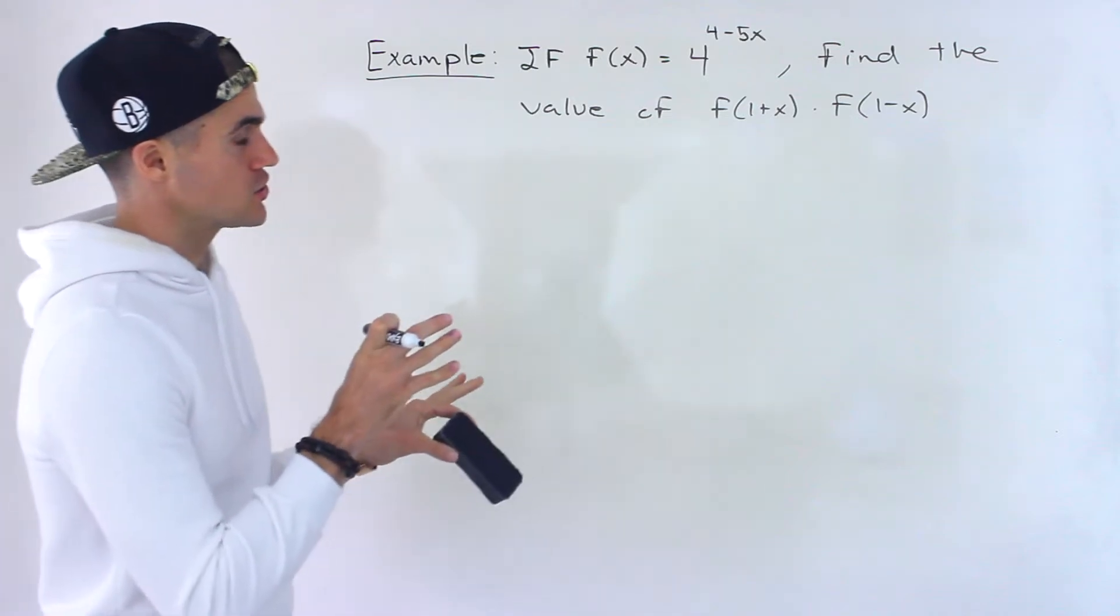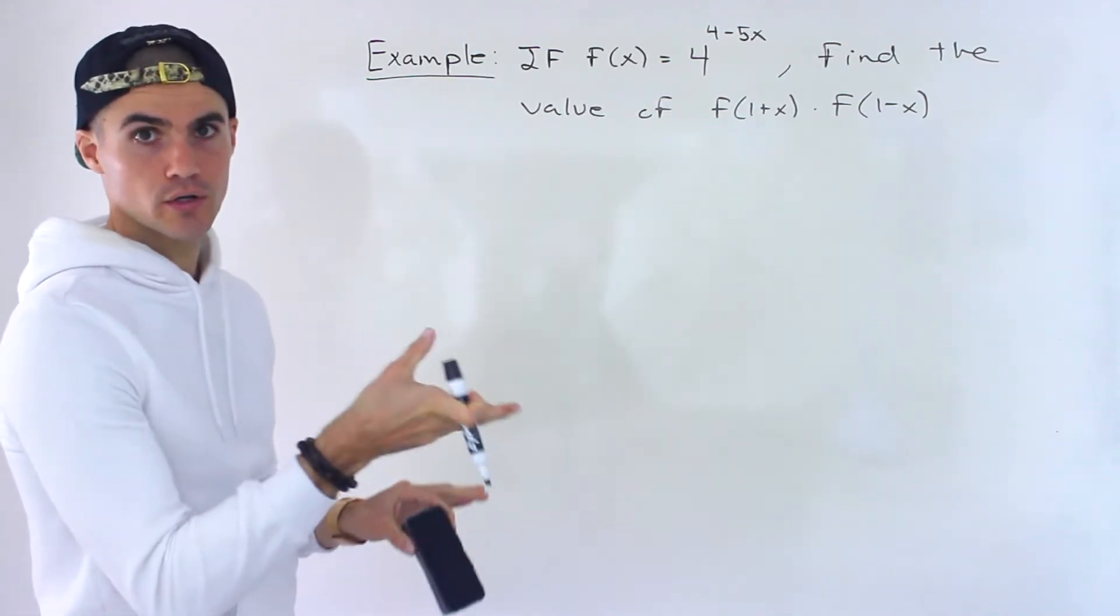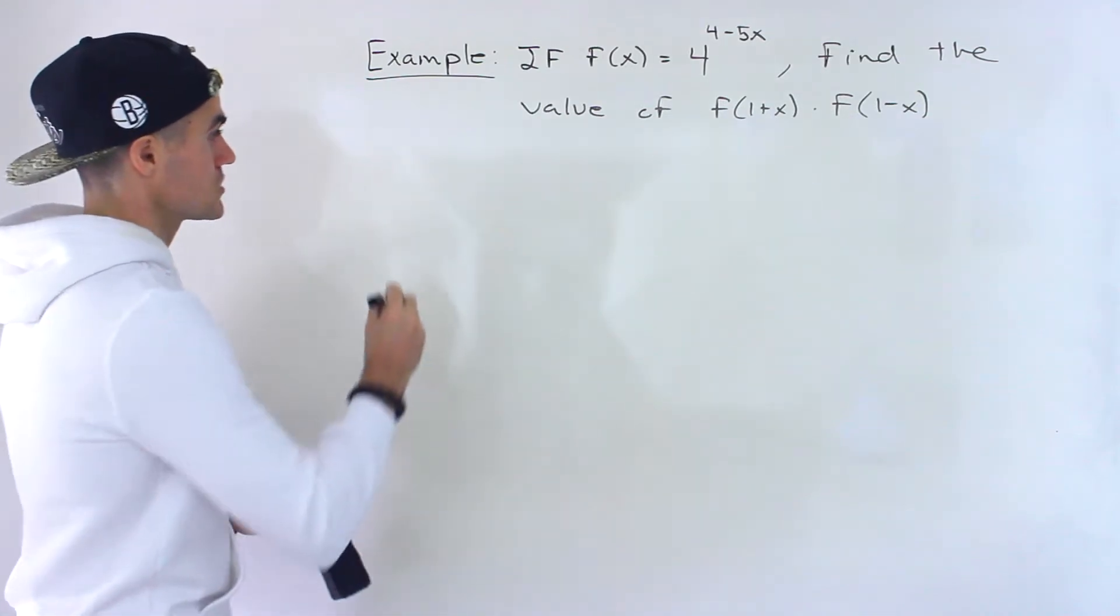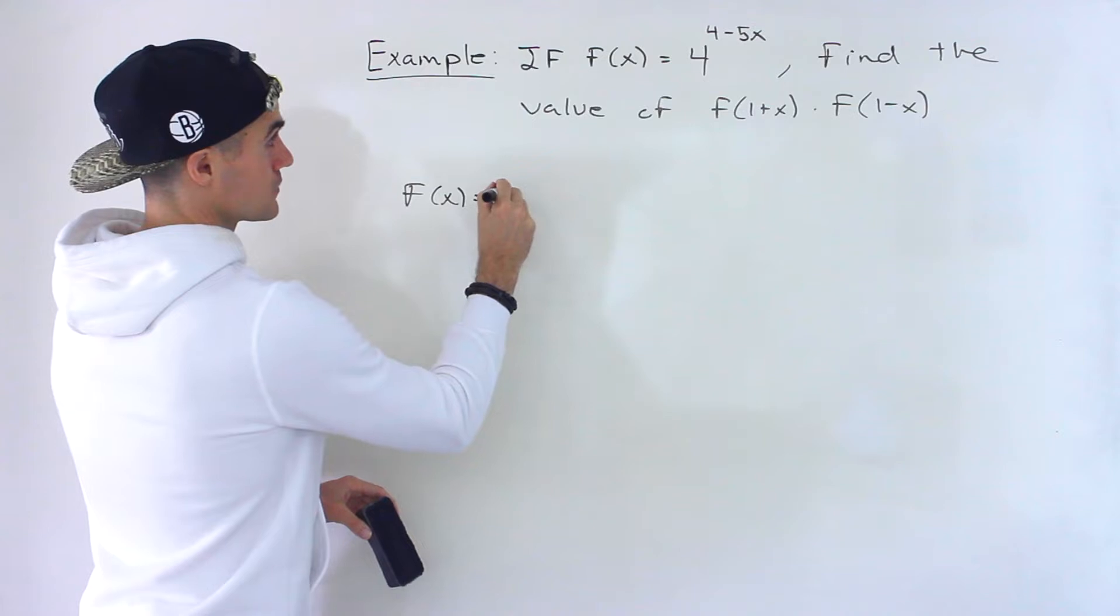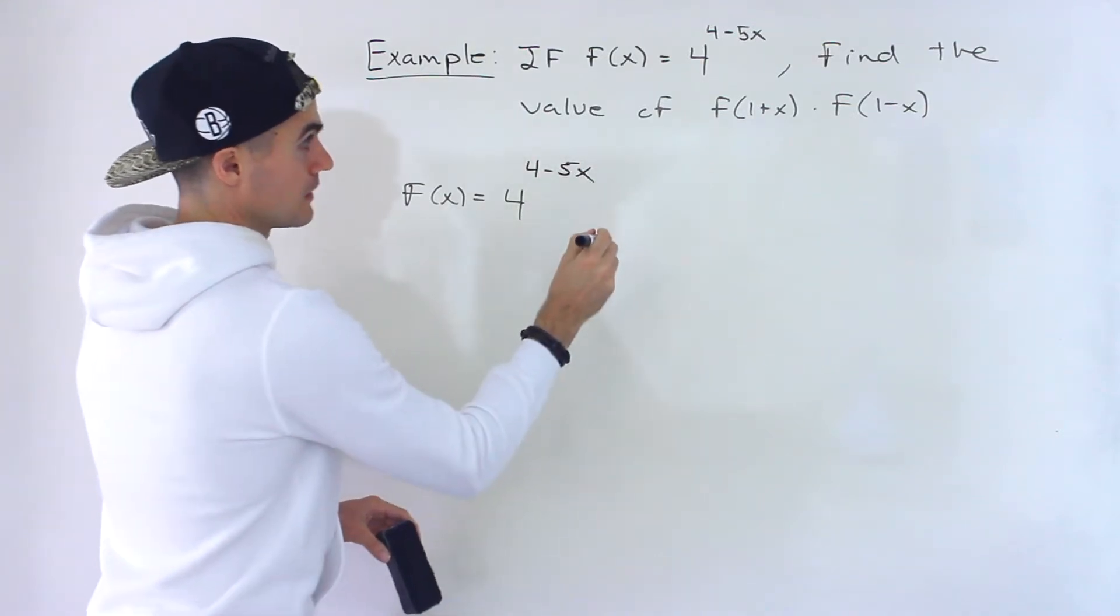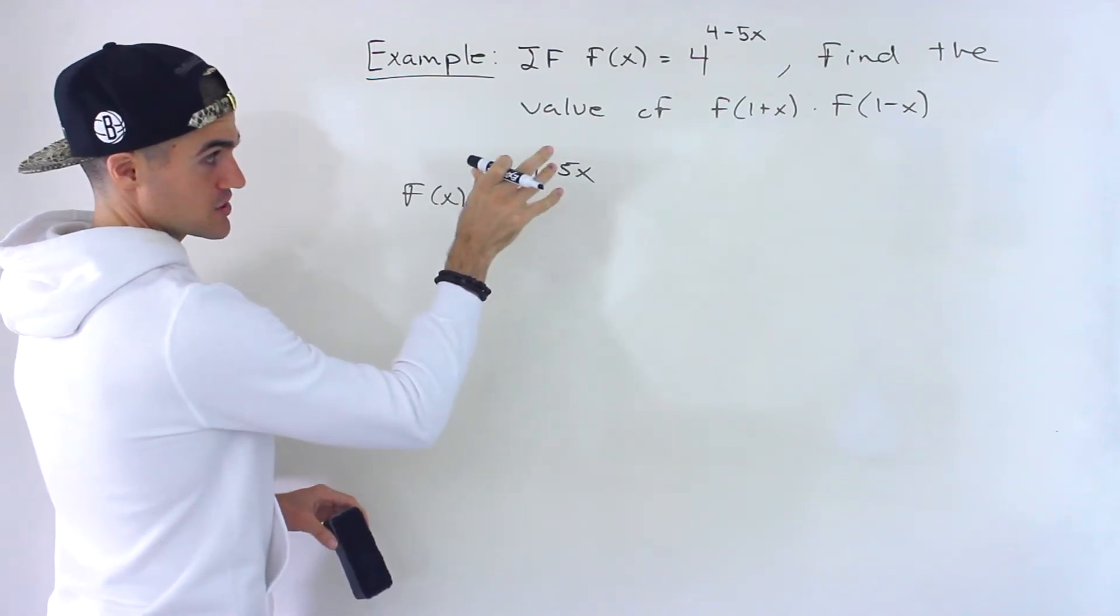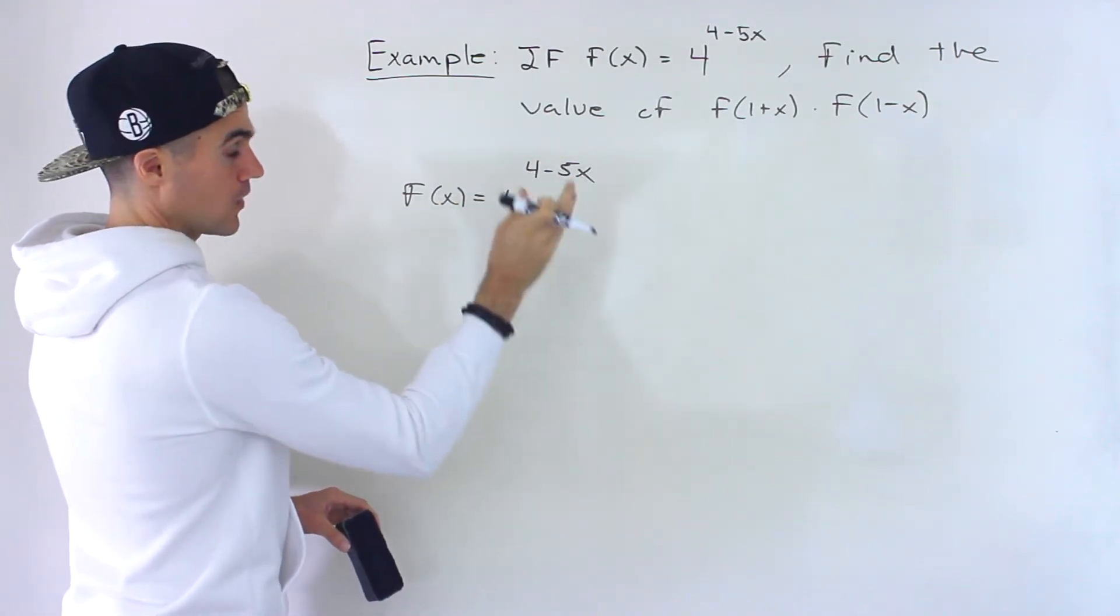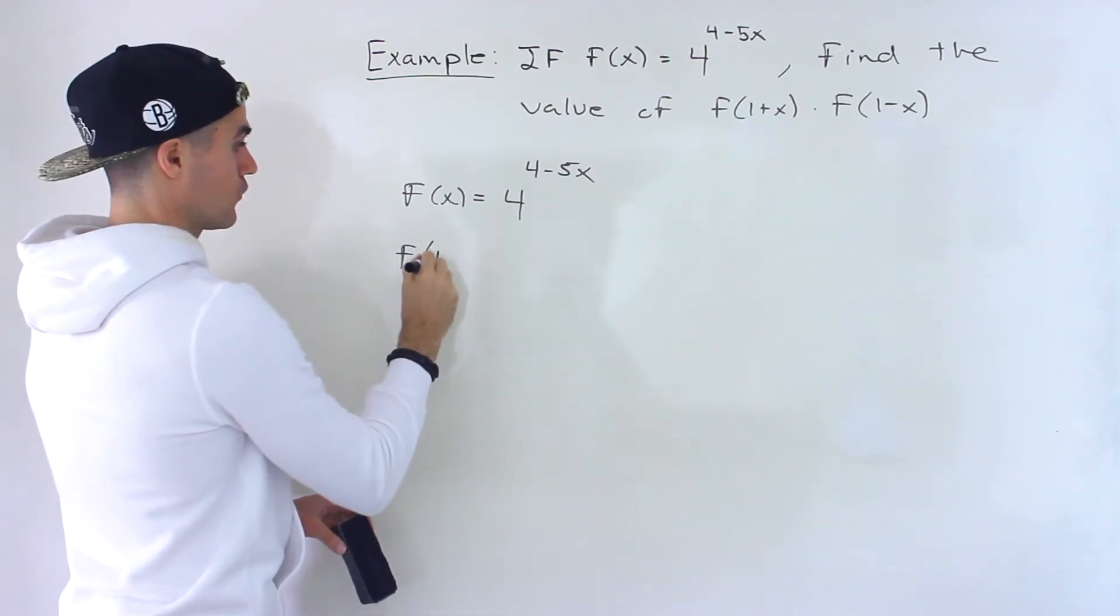Notice that this is a combination of working with exponential functions and also working with function notation. If I rewrite this function here, f of x equals 4 to the power of 4 minus 5x, let's first start off by getting each of those expressions, f of 1 plus x and f of 1 minus x separately, like a simplified form for both of them.